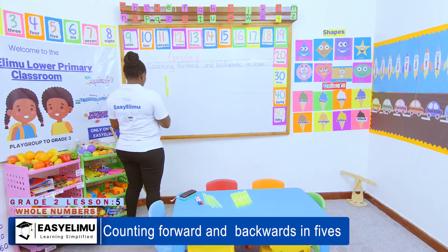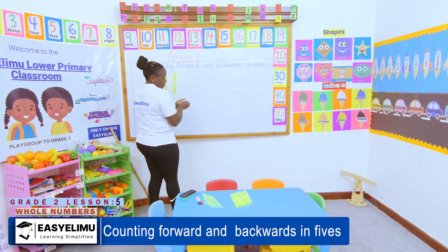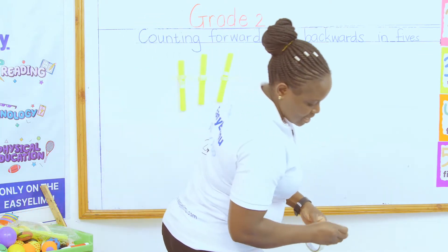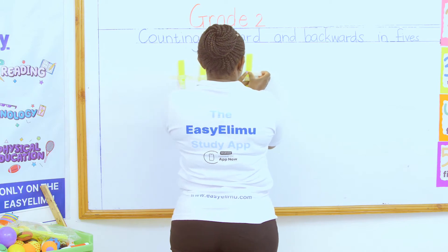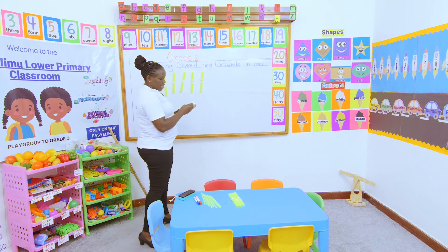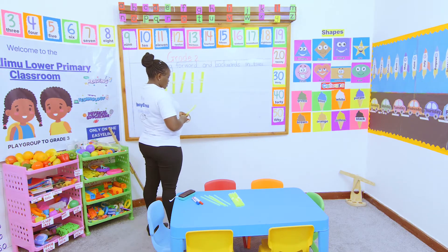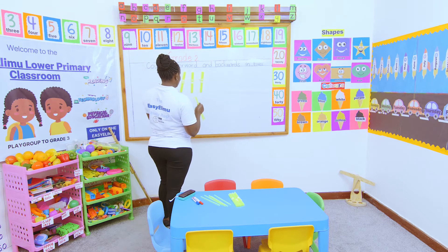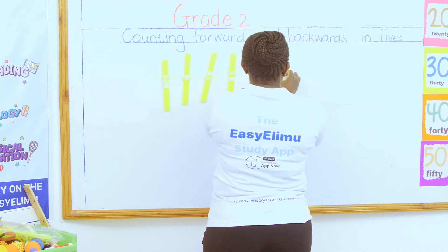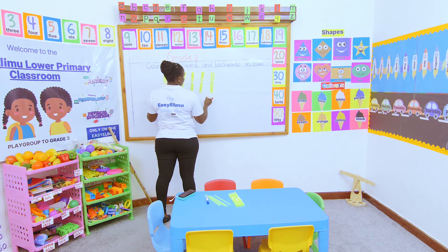How many bundles of sticks do I require to make 55? Two bundles of ten sticks — that is 20. Three bundles of ten sticks — that is 30. Four bundles of ten sticks — that is 40. Five bundles of ten sticks — that is 50. And if we are adding the small ones, we are counting from 55 using bundles of sticks. This is five tens and five ones, which gives us 55.